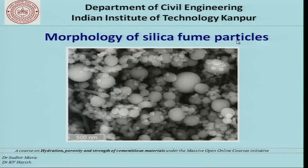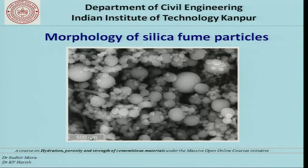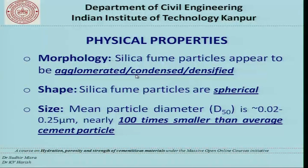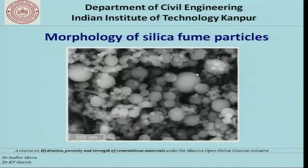A scanning electron microscope image at the 500 nanometer level shows that silica fume particles are spherical in shape. At this scale we also observe agglomeration — particles joined together — generally seen in agglomerated, condensed, or densified form.